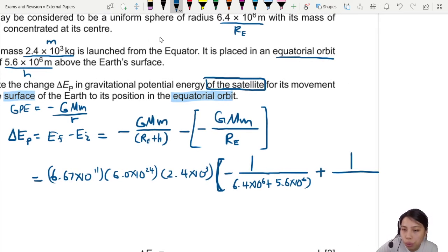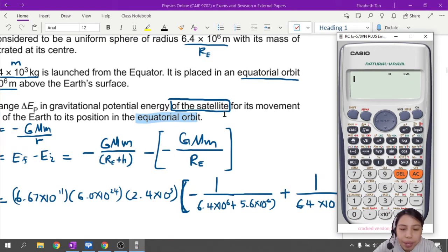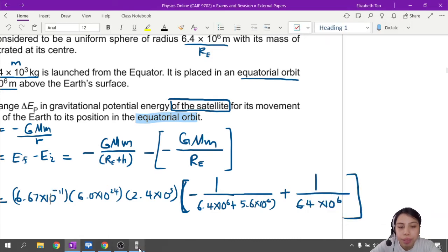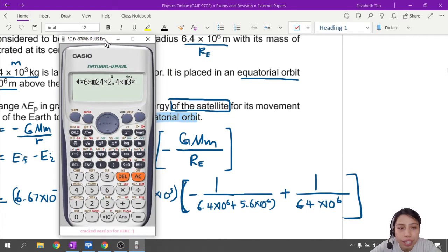Then plus 1 over R_E. I guess I just have to scroll over. So 1 over radius of the Earth, 6.4 times 10^6. Now if you have a really complicated line to type in, I recommend you use the fraction function of your calculator. So in case you don't know how to do that, I'm going to show you this once. So 6.67 times 10 negative, did I forget the negative again? Negative 11.